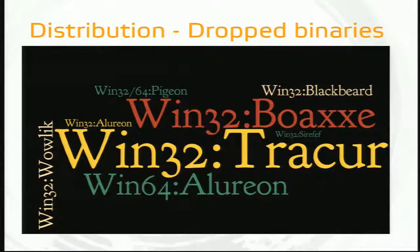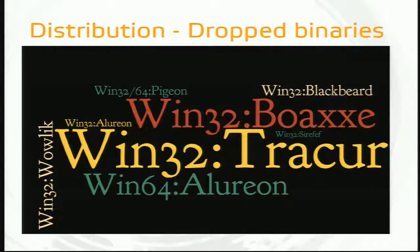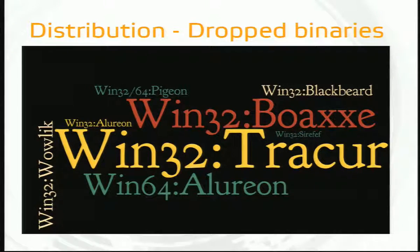This world map shows a few families — the higher the font, the higher the number of unique samples that arrived in our group. We see that Blocks and Tracker families performing search hijacking were the most prominent ones, followed by Alureon, Love Lake, Blackbeard, Pigeon, and ZeroAccess.